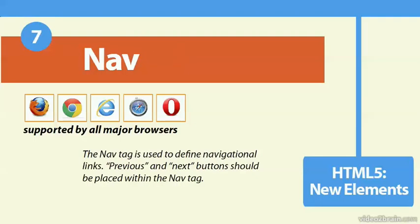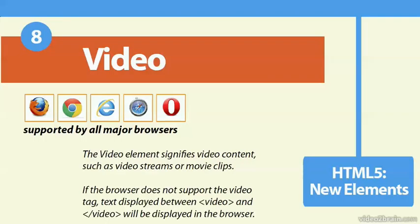The nav tag is used to define navigation links. It's also supported by all the major browsers, so any next or previous buttons that used to be standalone now will be inside the nav tag. And the video tag is also supported by all the major browsers — it is used to signify video content, such as movie clips or video streams.